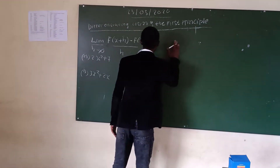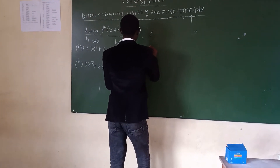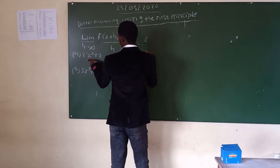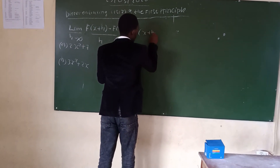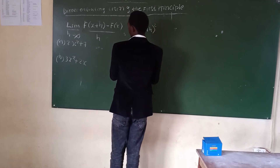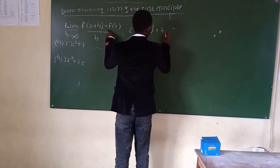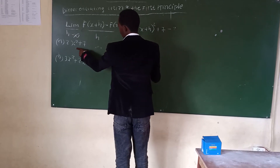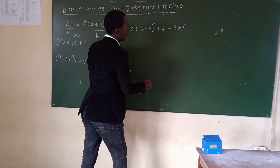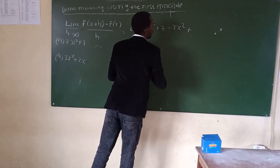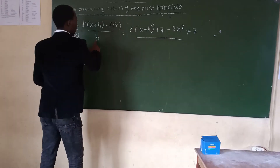So what you have to do first, you need to substitute. Where x is in the function, we put x plus h, you expand it: 2(x plus h) squared plus 7, minus the original function which is 2x squared plus 7, all divided by h.